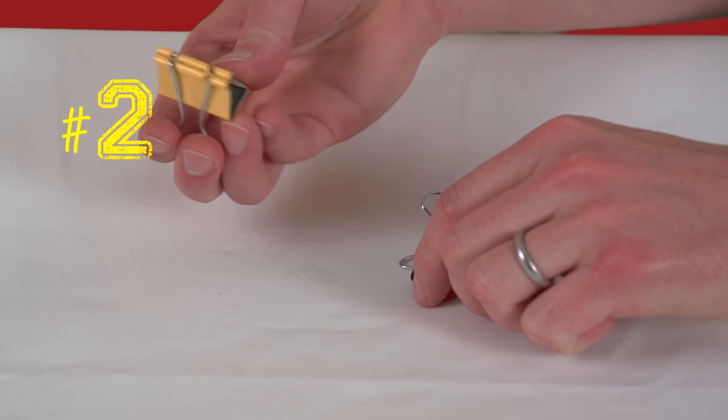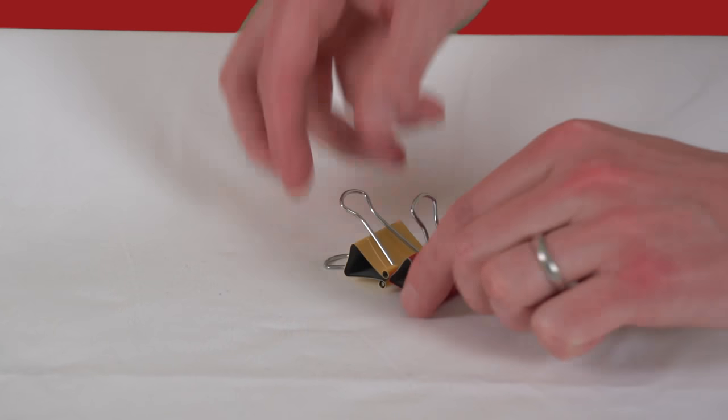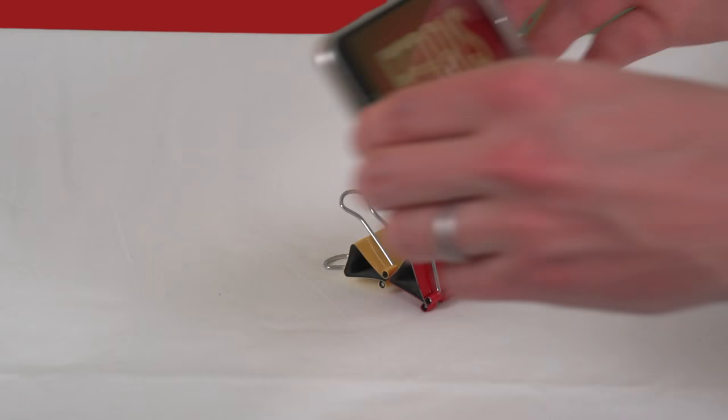For the second method simply take one clip and clamp it to one of the handles of the other clip. And with that you have another phone stand.